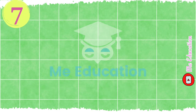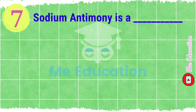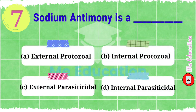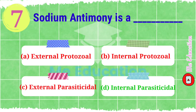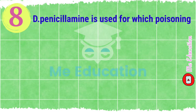Question number seven: sodium antimony — dash. What chemical characteristics does sodium antimony contain? Options: A) external protozoal, B) internal protozoal. The right answer is internal parasiticidal.